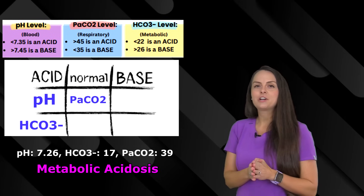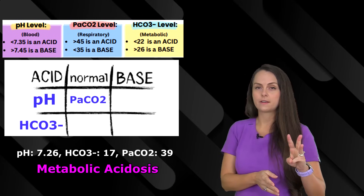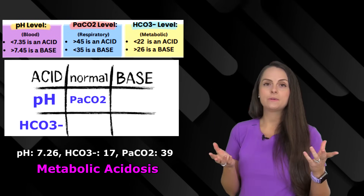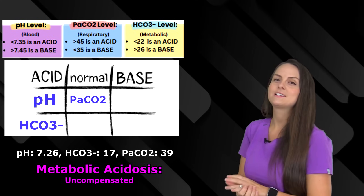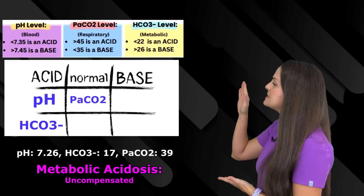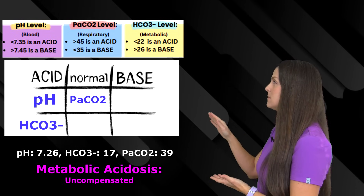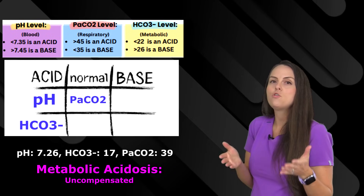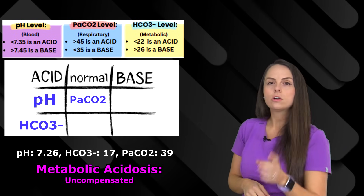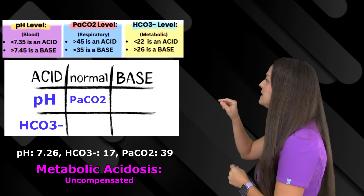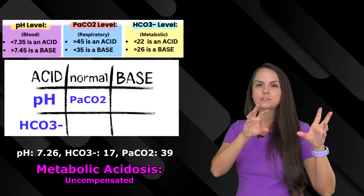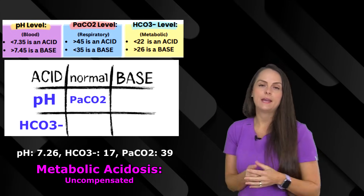Now we need to determine the compensation status. We can rule out full compensation because blood pH is not normal. The answer is uncompensated — the PaCO2 is hanging out in the normal range, so the respiratory system is not compensating right now. If it were partial compensation, that PaCO2 would need to be less than 35, indicating it has shifted into more alkaline numbers to help lower CO2 and increase blood pH.